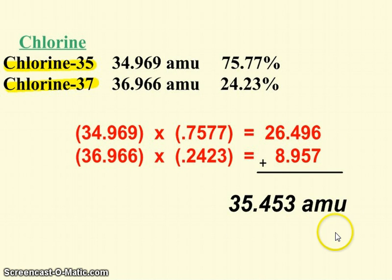And when you add them together, you get 35.453, which is pretty much what the periodic table says for chlorine.